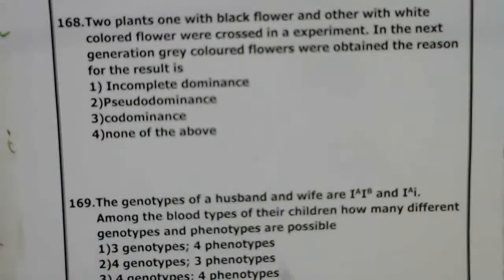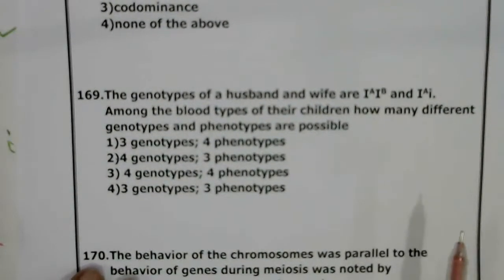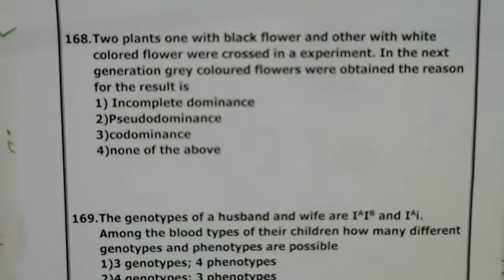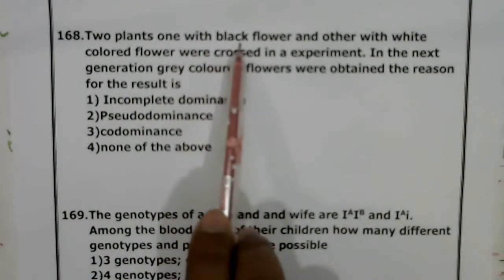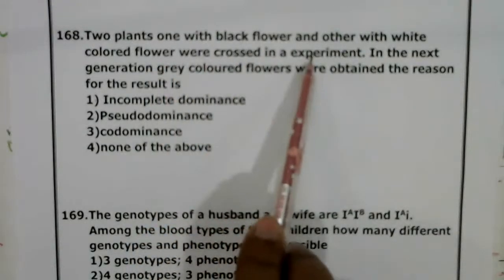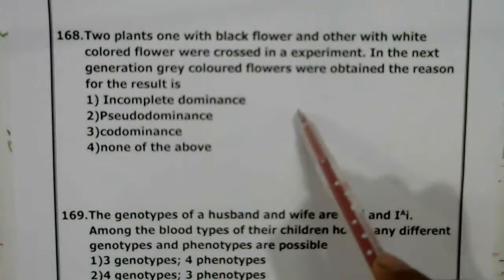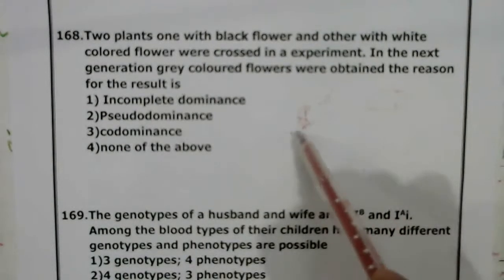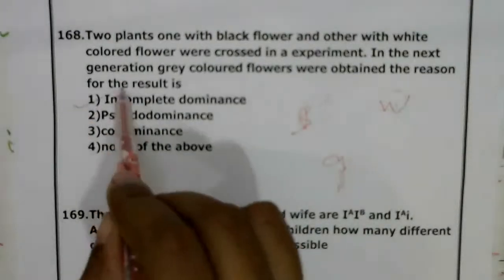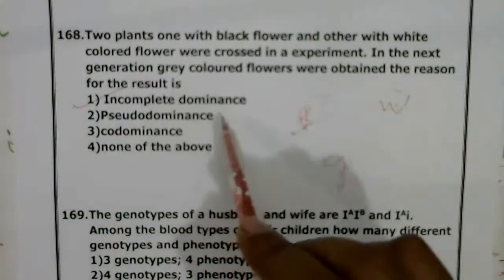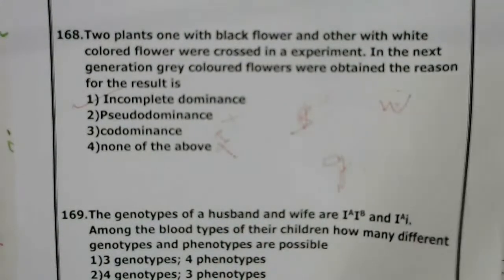Question 168: Two plants — one with black flower and one with white flower — were crossed. In the next generation, an intermediate character (neither black nor white) appeared. This indicates incomplete dominance, not codominance. So the correct answer is incomplete dominance; pseudodominance and codominance are not the answers.